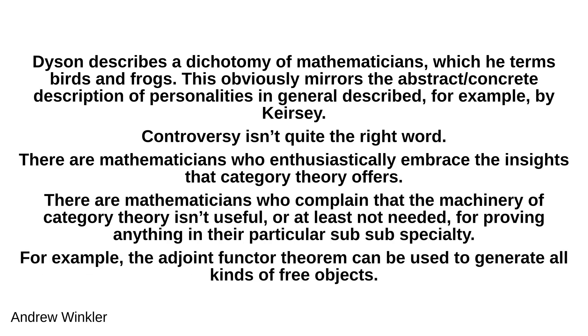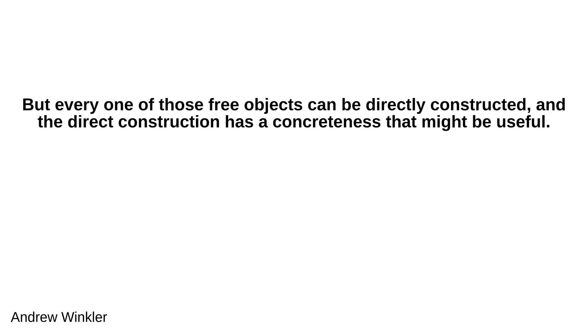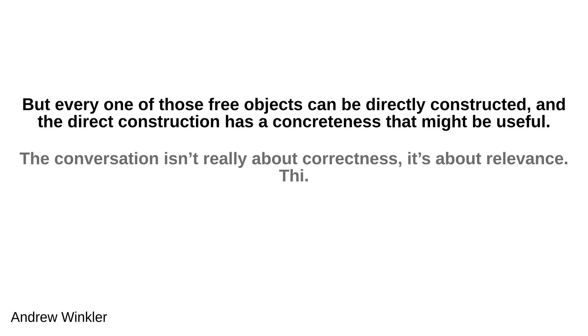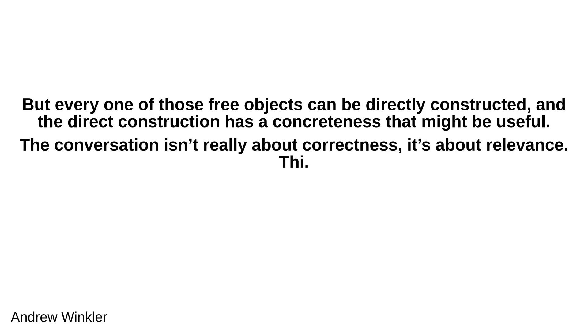For example, the adjoint functor theorem can be used to generate all kinds of free objects. But every one of those free objects can be directly constructed, and the direct construction has a concreteness that might be useful. The conversation isn't really about correctness, it's about relevance.